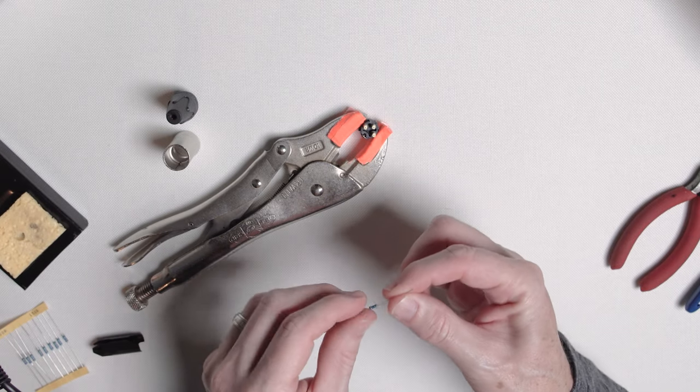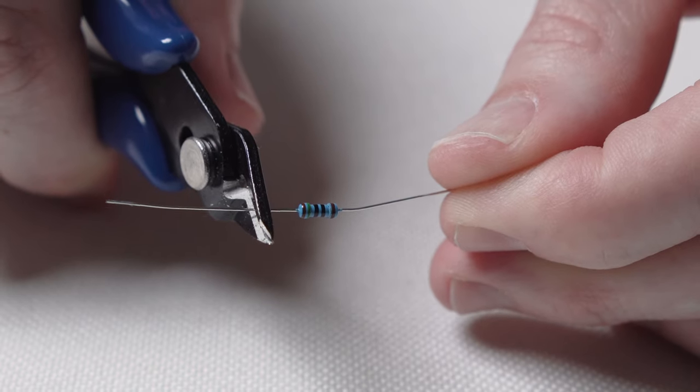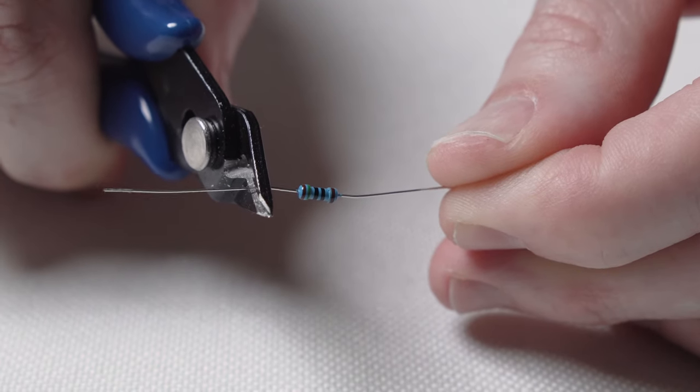Okay, now get one of your resistors and trim the leads here so that it fits inside the plug. And there's a lot of room in there so you probably don't need to cut them as short as I did.